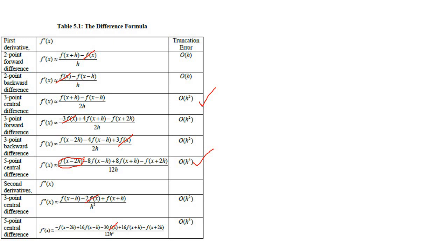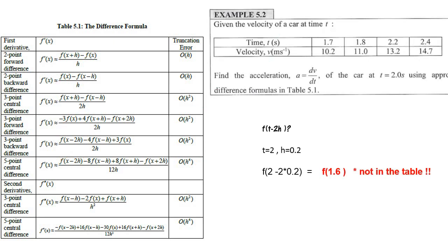If we refer back to here, for this one we need to check. If we have t at 2 and our interval we assume h equal to 0.2, if we check we do not have this in the table. We cannot use this table. So the last one, we only have this three-point central difference because we do not have 1.6 over here. Actually we cannot use it because the interval is not the same.